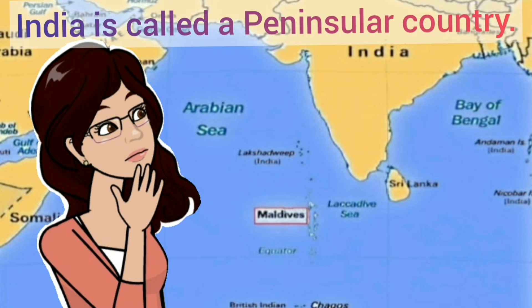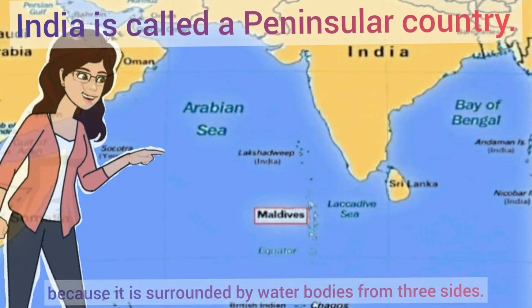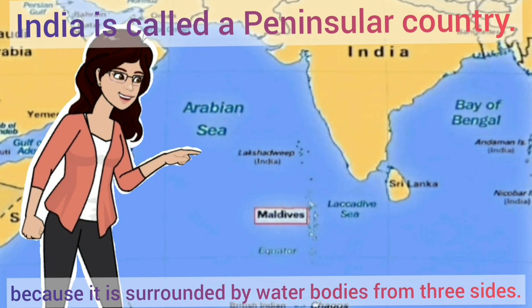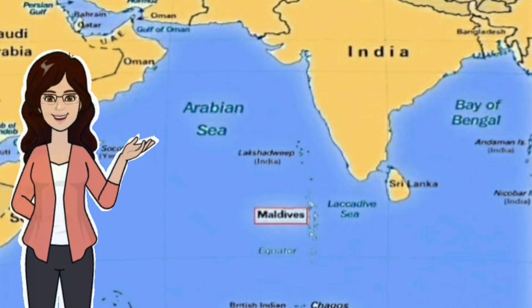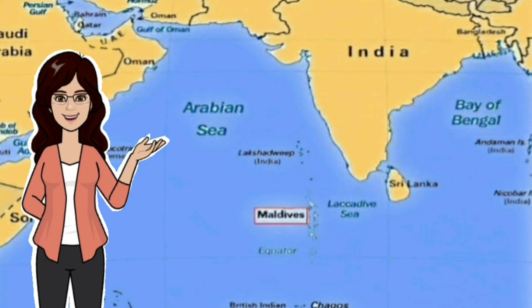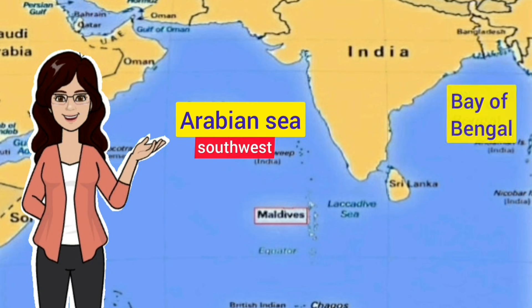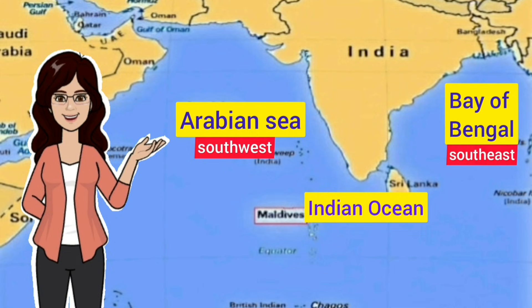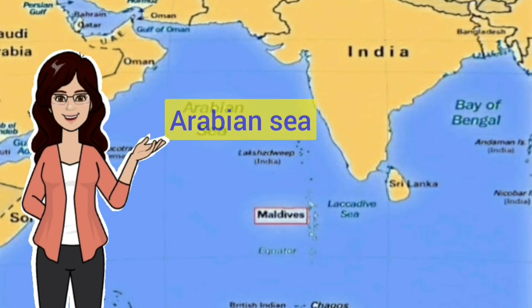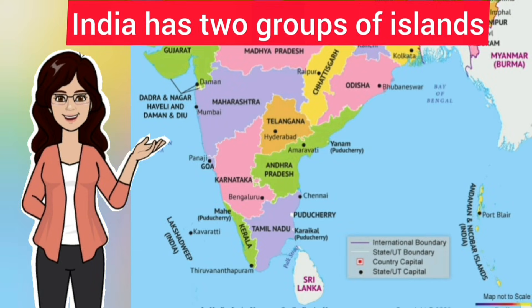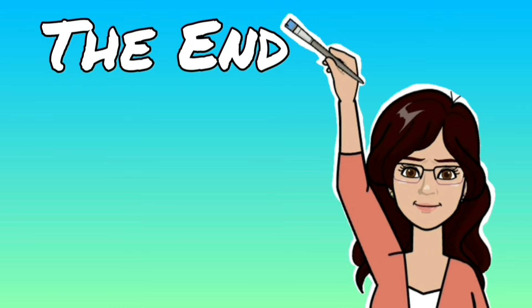India is called a peninsular country because it is surrounded by water bodies from three sides: the Arabian Sea in the southwest, the Bay of Bengal in the southeast, and the Indian Ocean in the south. India also has two groups of islands — the Andaman and Nicobar Islands in the Bay of Bengal, and the Lakshadweep Islands in the Arabian Sea.